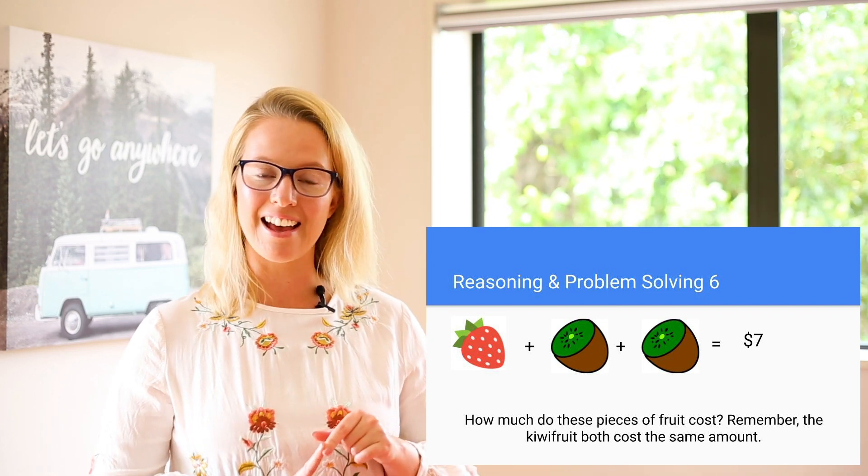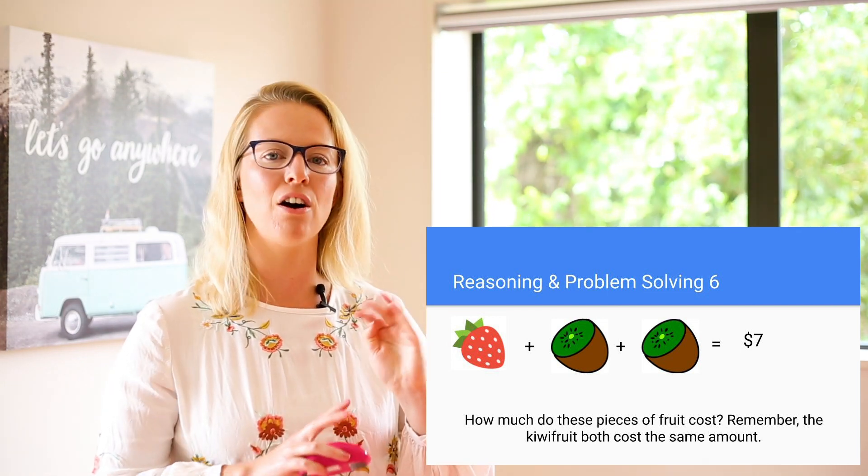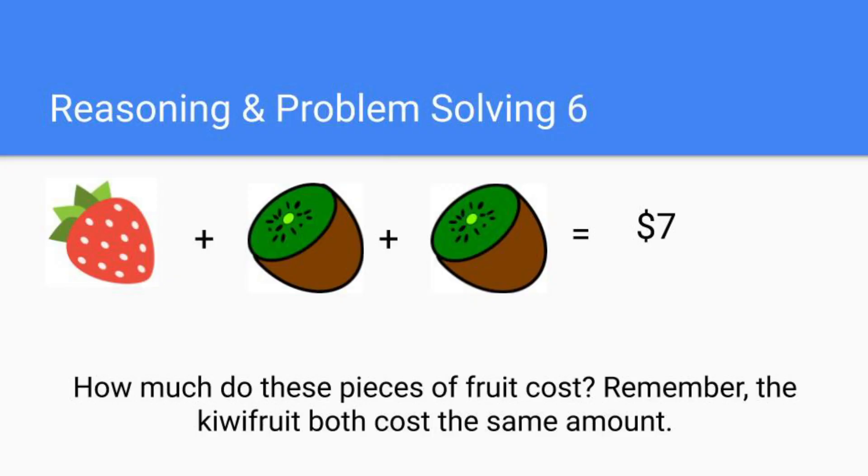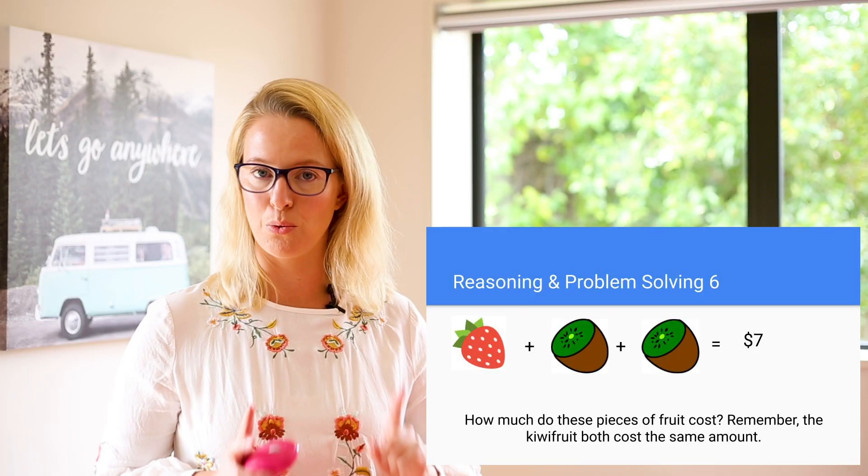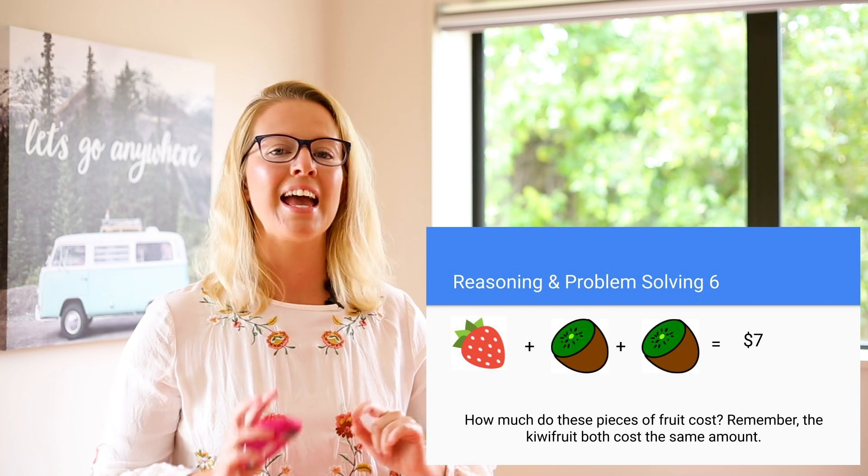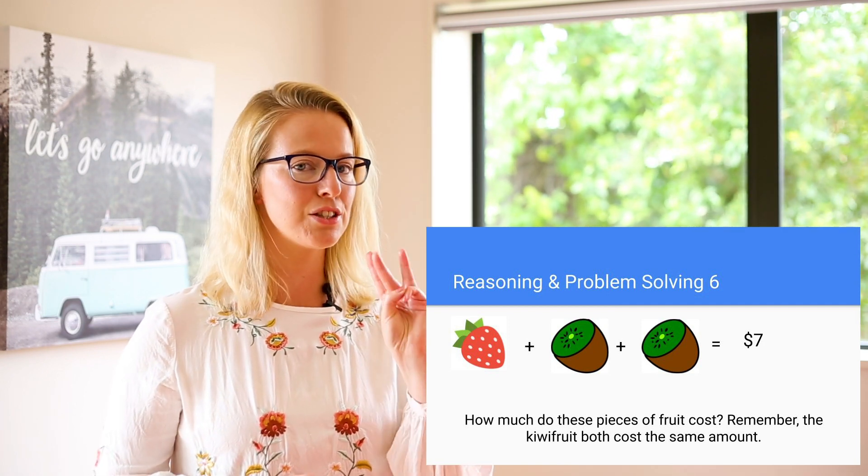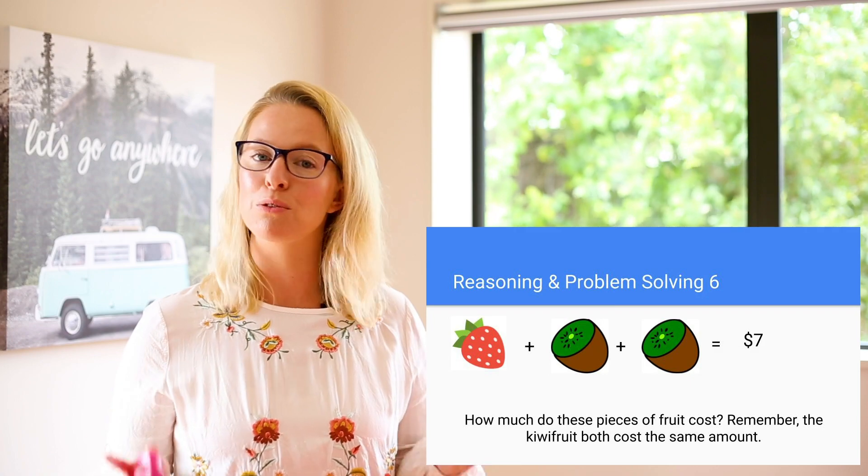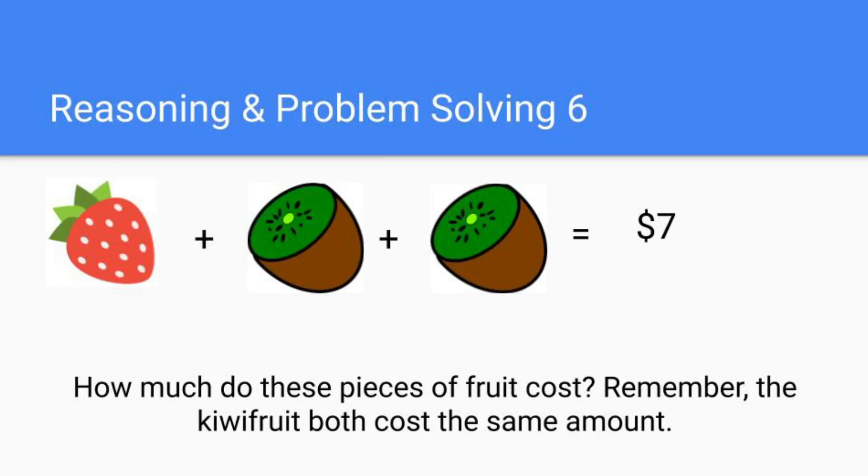Right, this one here has got three pieces of fruit that cost a little bit more. We've got one strawberry and two pieces of kiwifruit that cost seven dollars all together. Now the question is asking, how much do these pieces of fruit cost? Remember the kiwifruit both cost the same amount. So both the kiwifruits cost the same amount as each other. Now there are going to be different answers for this question. I want you to pause the video here and then I want you to figure out different equations to make these three pieces of fruit equals seven dollars. All right, pause the video and I'll see you afterwards.